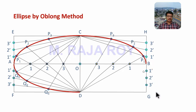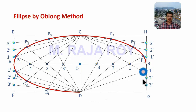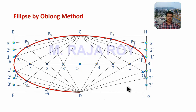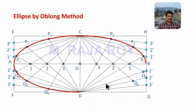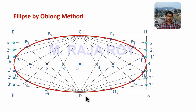For the final quarter, divide the last side into 1 dash, 2 dash, 3 dash. Draw D1 dash, then C1 extended — here you get Q1. Then D2 dash, C2 extended — this is Q2. Then D3 dash, C3 extended — this is Q3. Draw a smooth curve joining all these points. In this way you can complete the ellipse using the Oblong method.